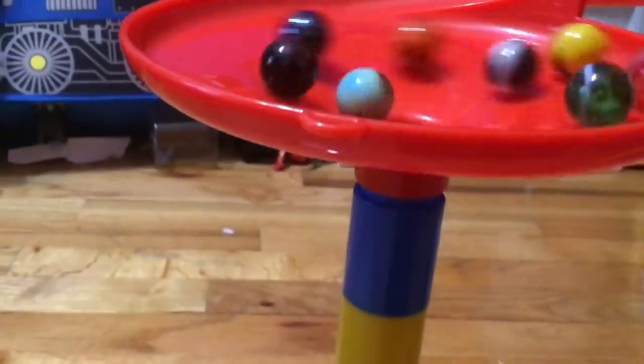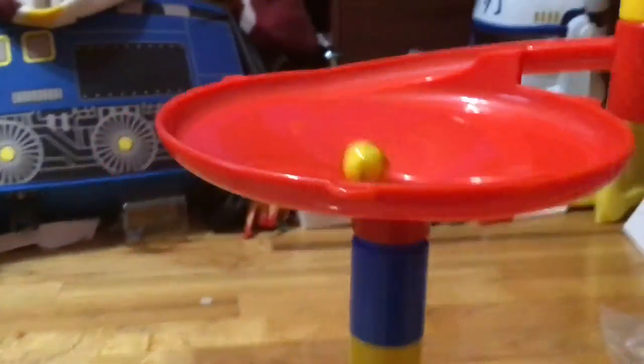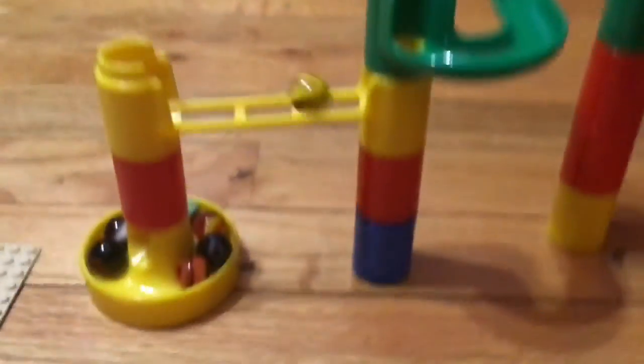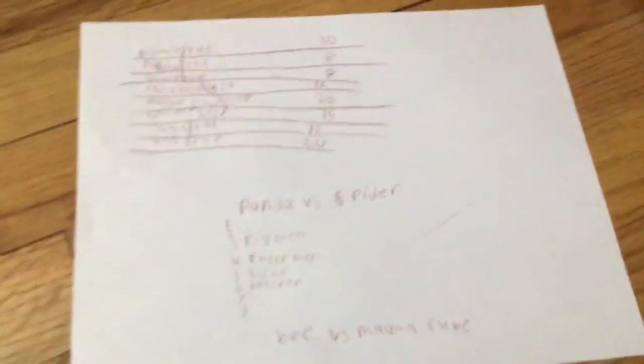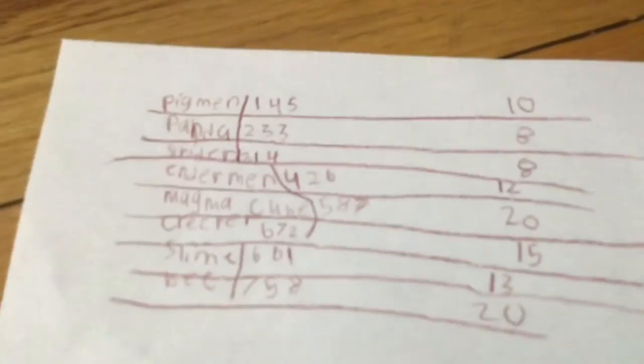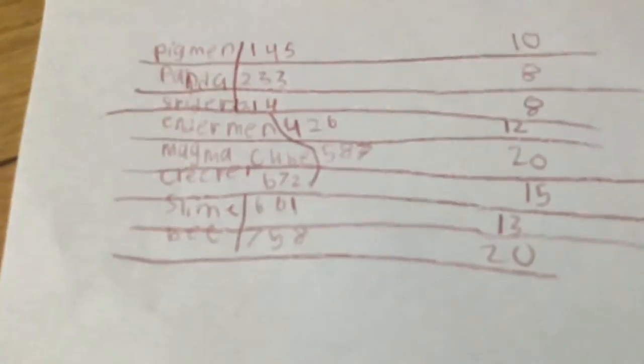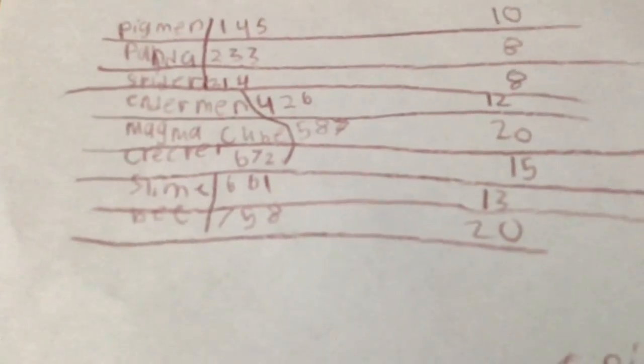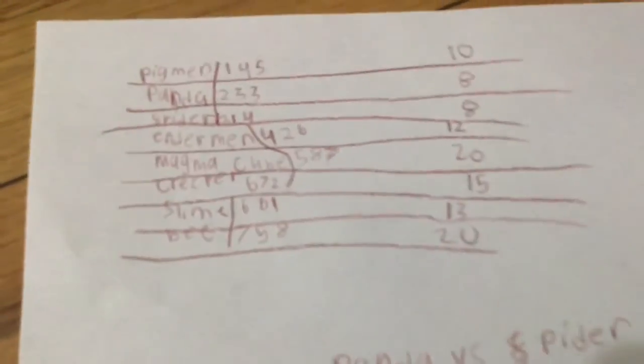And we'll go on to our final round. It looks like Slime taking it and Pigman going in. I know Bumblebee will be last, but who got the most points? This might look a little confusing but Pigman with 10, Panda with 8, Spider 8, Enderman 12, Magma Cube 20, Creeper 15, Slime 13, Bee 20. I forgot to say that a marble with the most points will be eliminated. I think the person with the most points will be the winner.